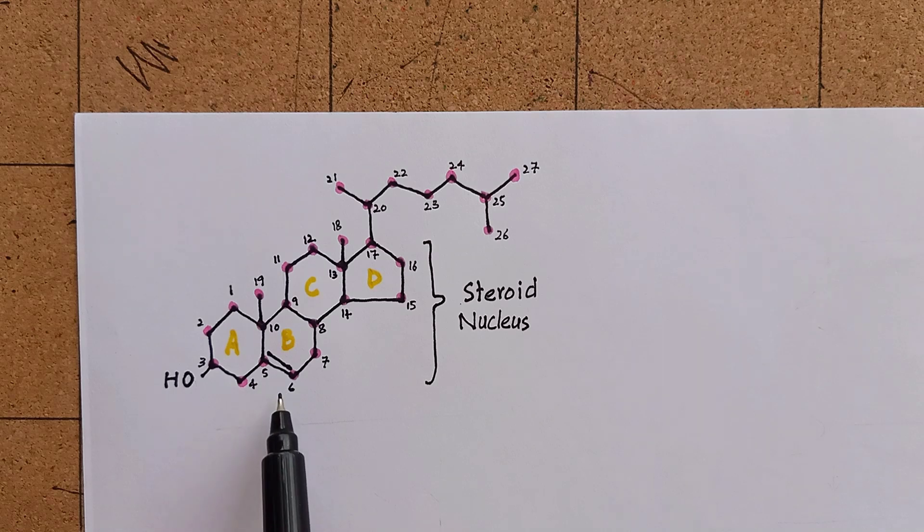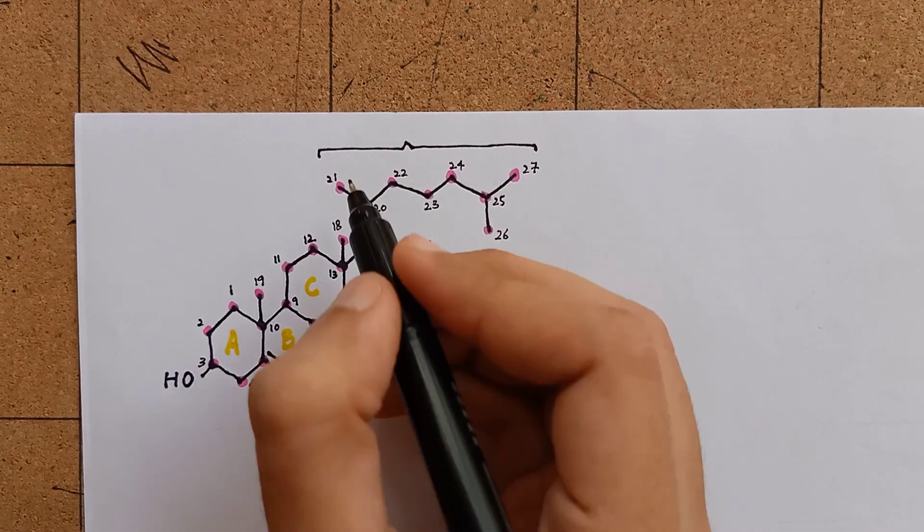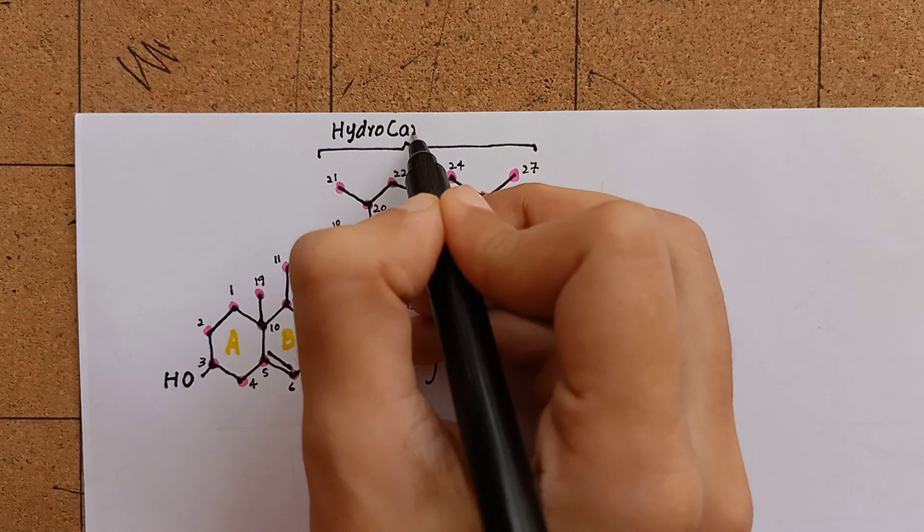There is a double bond between 5th and 6th carbon atoms. And there is a hydrocarbon chain attached to the 17th carbon atom. This is an 8-carbon chain and it is also called hydrocarbon tail.